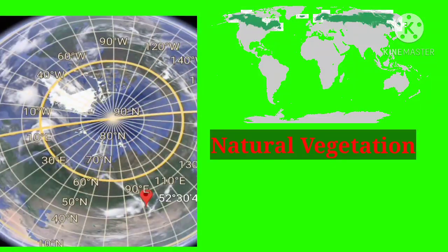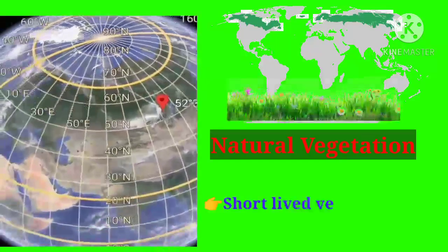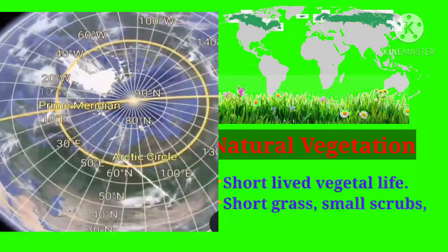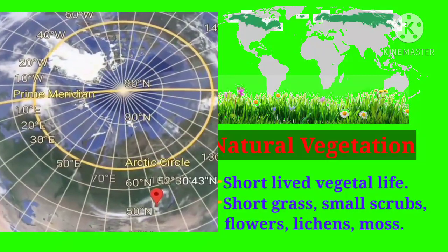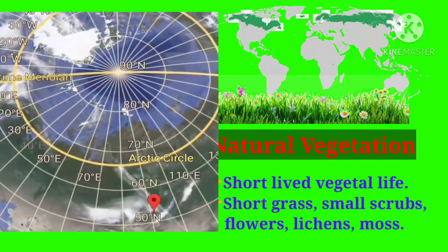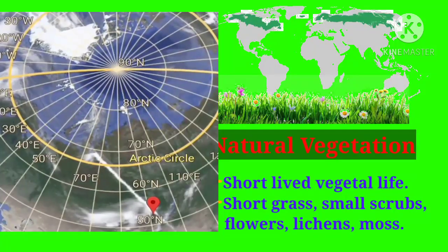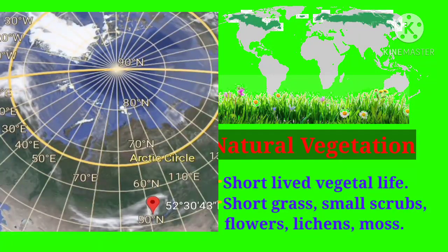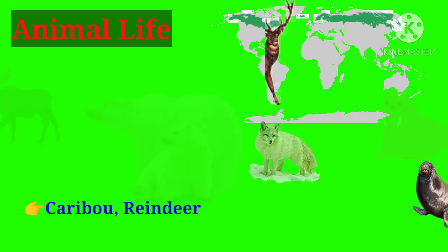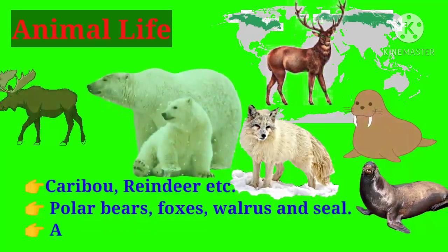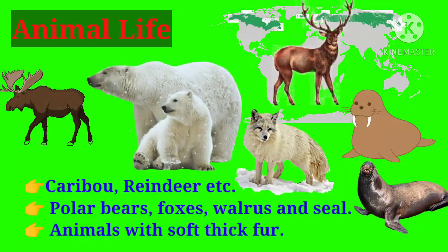Natural vegetation in the tundra region is short-lived. Plants live for a very short time — short grasses, small shrubs, flowers, lichens, and mosses grow here. Animal life in the tundra region includes caribou, reindeer, polar bears, foxes, walrus, and seals. The animals found here have soft and thick fur.